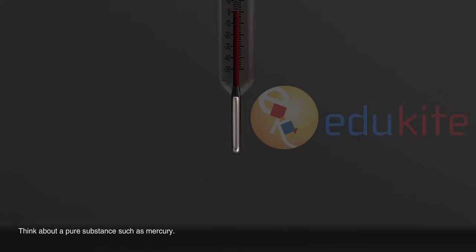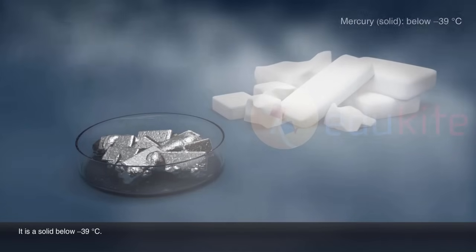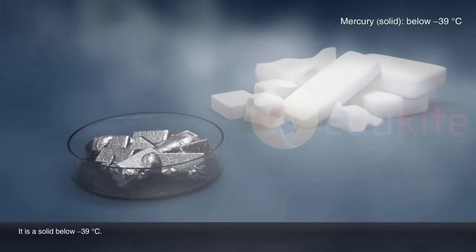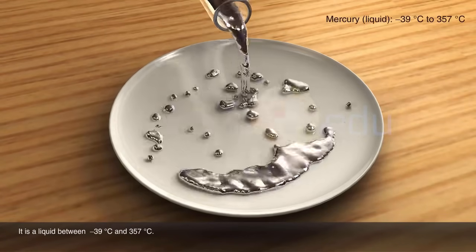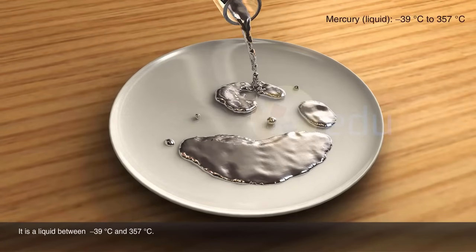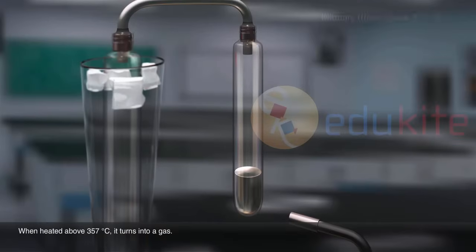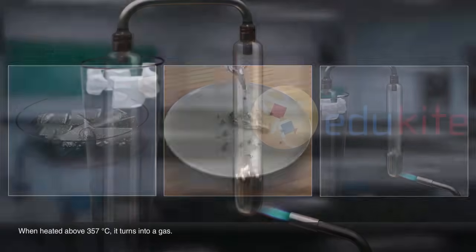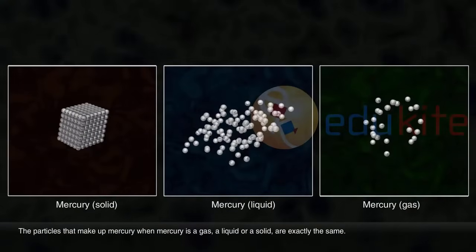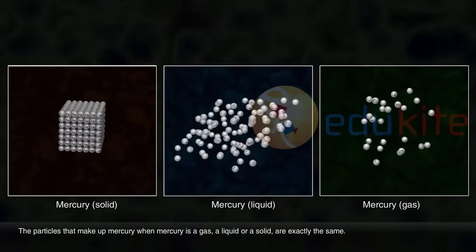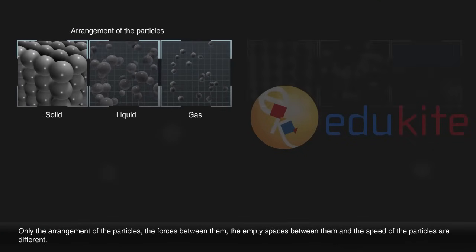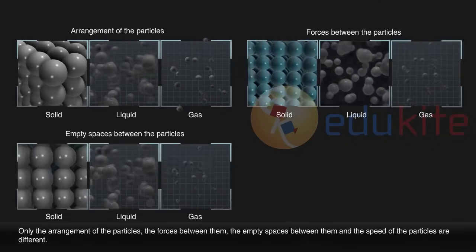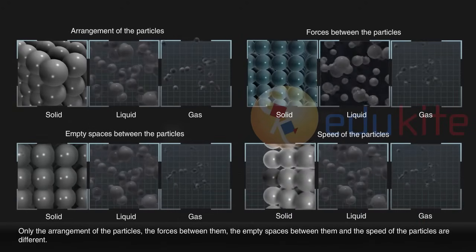Think about a pure substance such as mercury. It is a solid below negative 39 degrees Celsius. It is a liquid between negative 39 degrees Celsius and 357 degrees Celsius. When heated above 357 degrees Celsius, it turns into a gas. The particles that make up mercury when mercury is a gas, a liquid or a solid are exactly the same. Only the arrangement of the particles, the forces between them, the empty spaces between them and the speed of the particles are different.